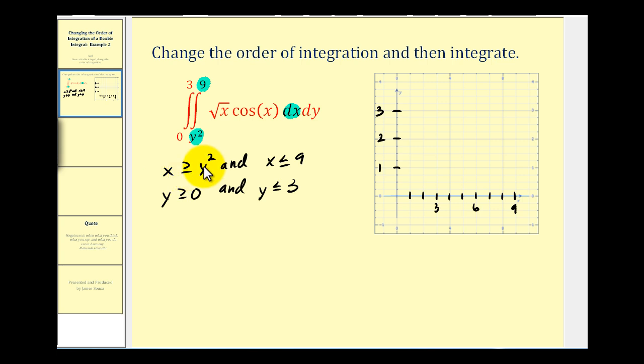Let's go ahead and graph this region. So here we have x is greater than or equal to y squared. Let's solve this for y. We'll square root both sides. We would have y is less than or equal to the square root of x. It would be plus or minus the square root of x, but since we know that y is positive, the square root of x would also be positive. Let's plot some points. We'd have the origin, the point one one. When x is four, y is two. And then when x is nine, y is three.